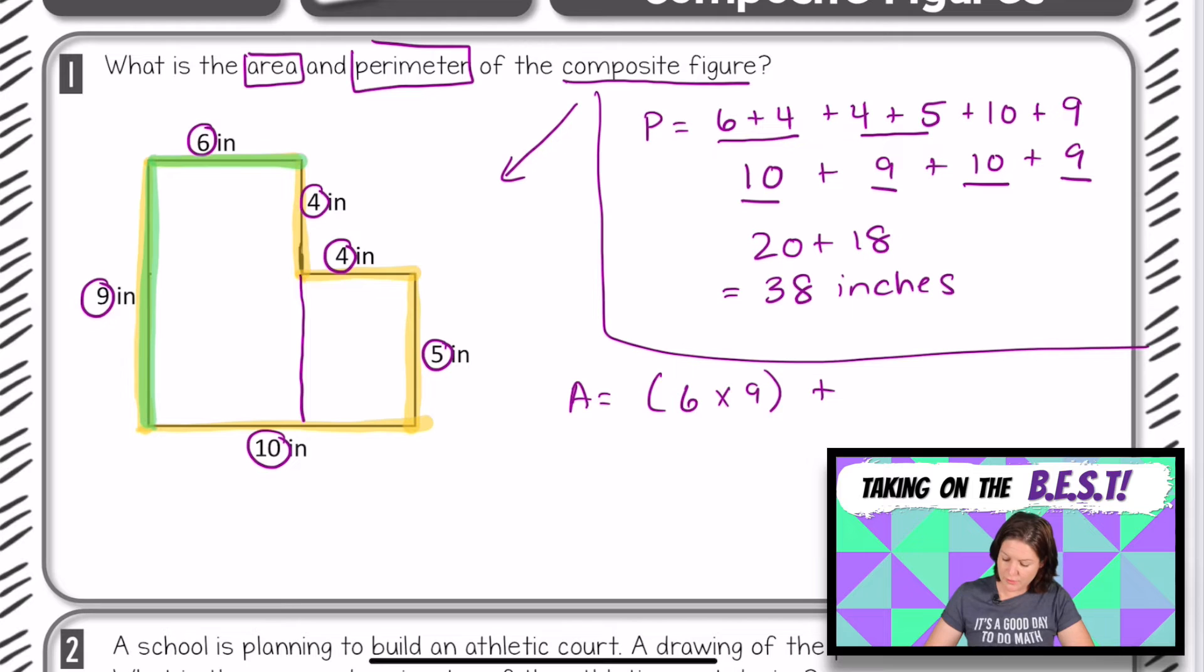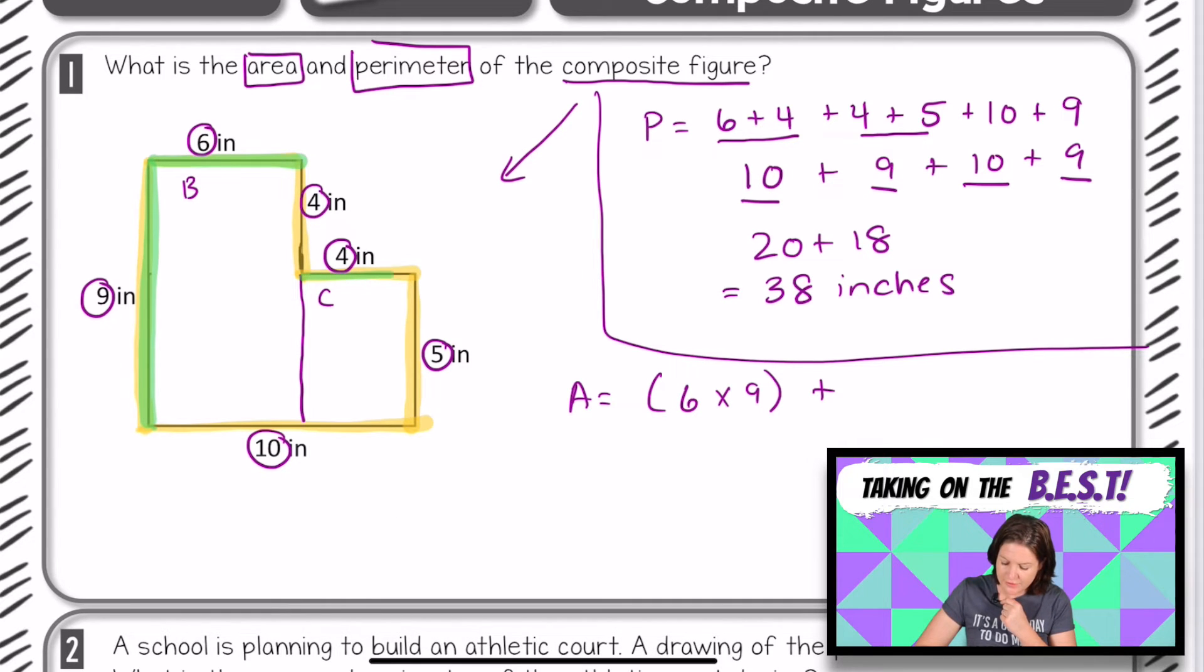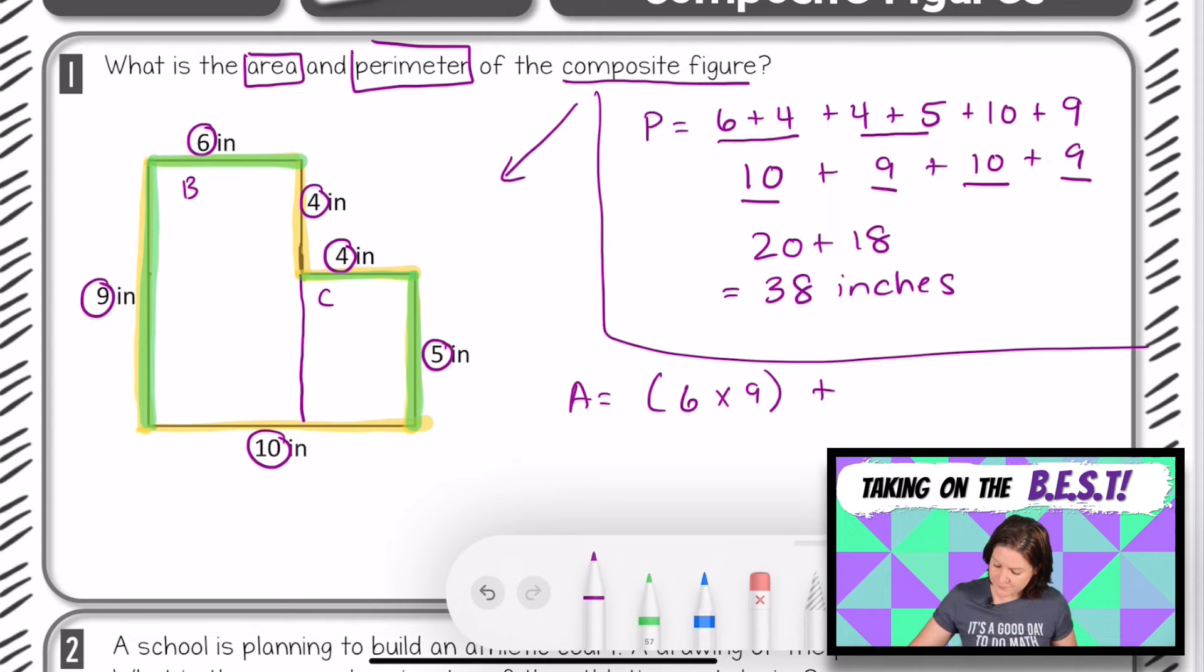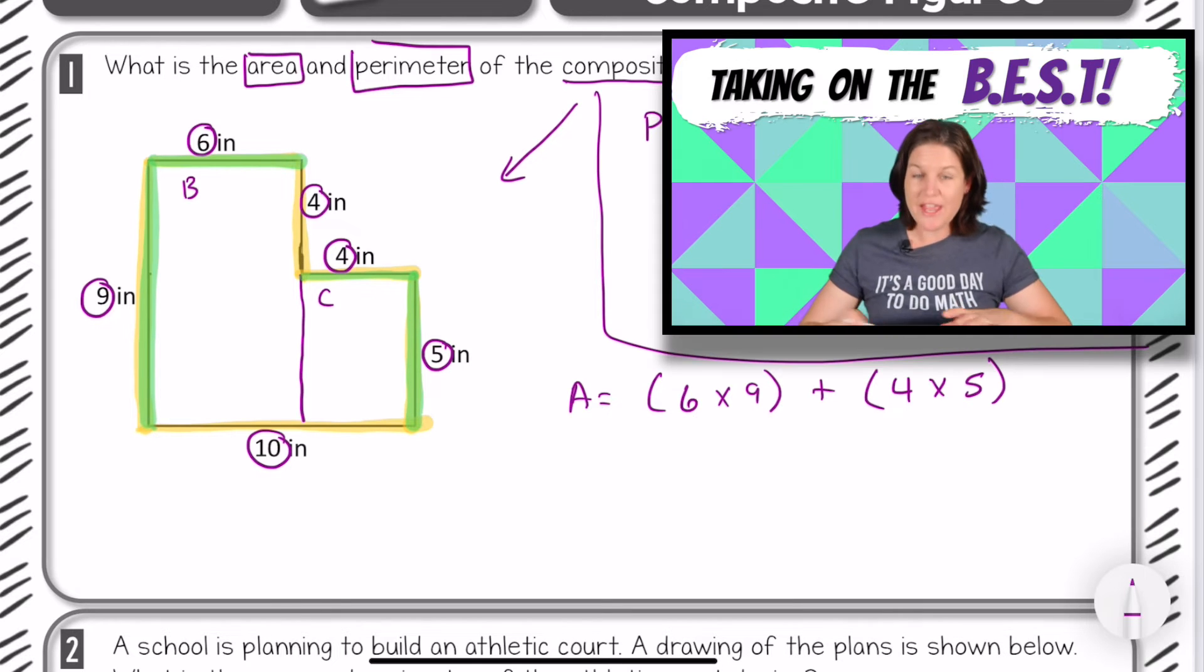You know what, maybe I should call this rectangle B and C just because we're labeling this as area, and A is standing for area here. Okay, so rectangle B has an area of 6 times 9. We'll figure that out in a second, and let's see about rectangle C, it looks like rectangle C has a length of 4 inches and a width of 5 inches, so we could also multiply 4 times 5 for rectangle C. All right, so we know the areas of both of the figures, now we just need to combine them to get the total area of the composite figure.